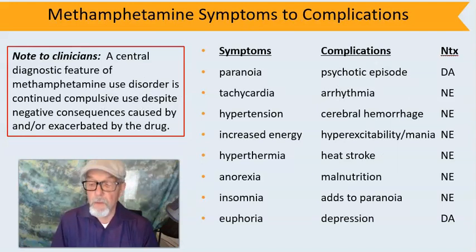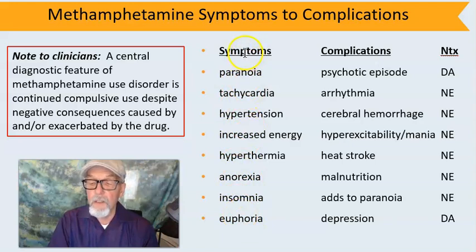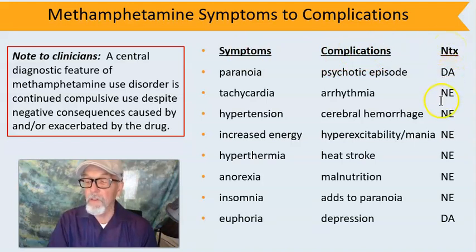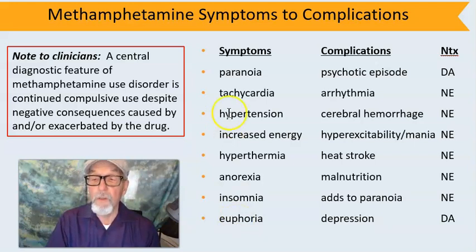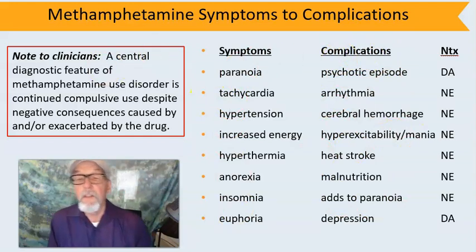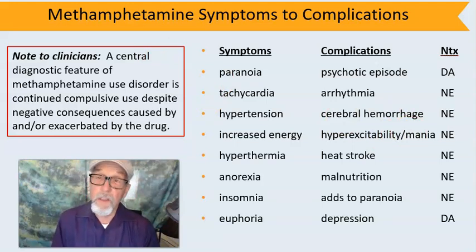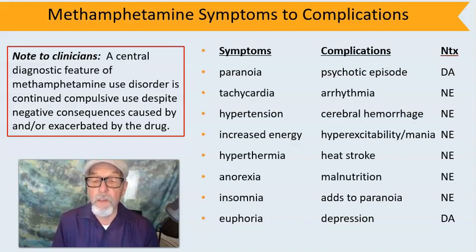This chart shows the common symptoms from methamphetamine use, and with continued use those symptoms can progress into complications — all based upon drug-induced excess of the neurotransmitters dopamine and norepinephrine. These symptoms are very typical for acute methamphetamine intoxication, and with repeated use they can progress into complications. A note to counselors and clinicians: the central diagnostic feature of substance use disorder, including methamphetamine use disorder, is continued compulsive use despite negative consequences caused by and/or exacerbated by the drug.